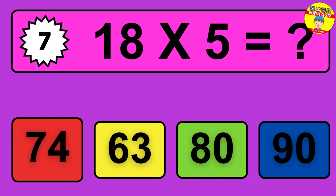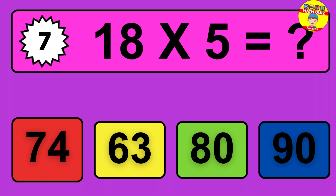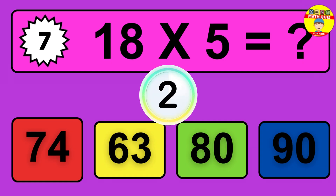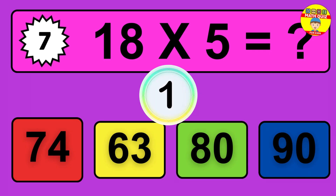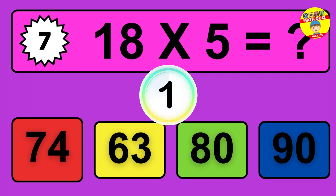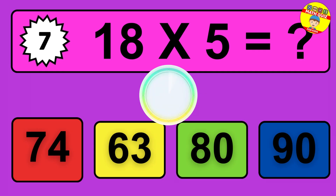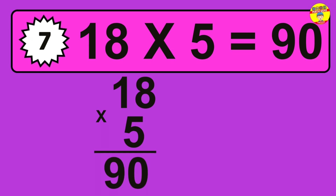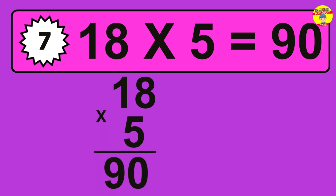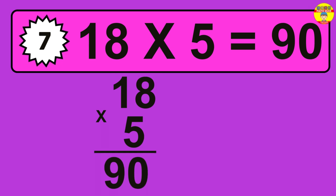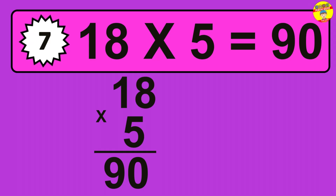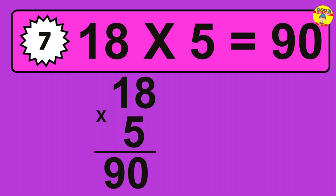Question 7. 18 times 5 equals what? The answer is 18 times 5 is 90. To calculate, we have 18 groups with 5 balls each one. So, how many balls do we have? 90 balls.